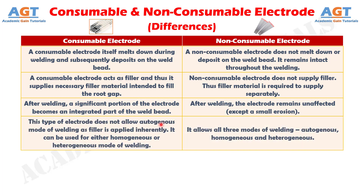Number 4: Consumable electrode does not allow autogenous mode of welding as filler is applied inherently. It can be used for either homogeneous or heterogeneous mode of welding, whereas non-consumable electrode allows all three modes of welding: autogenous, homogeneous and heterogeneous.